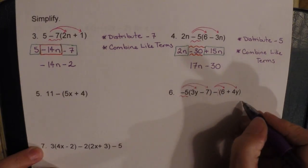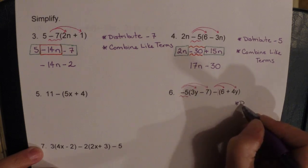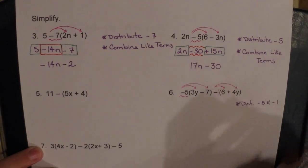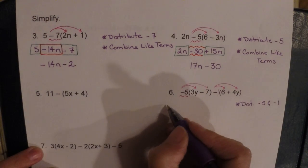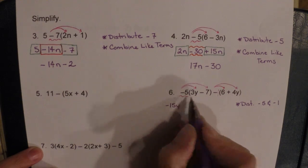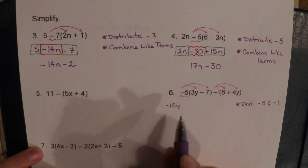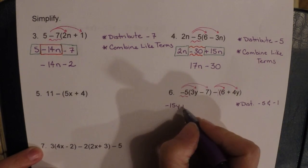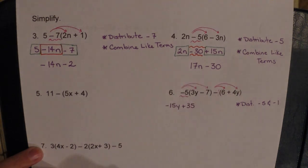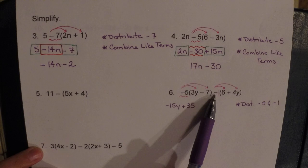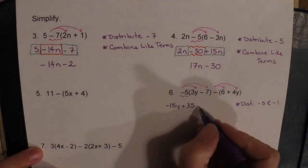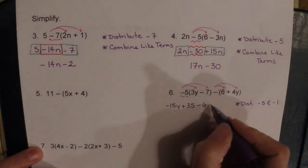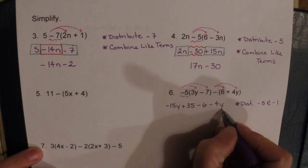Our first step is to distribute negative five and negative one. Negative five times 3y gives negative 15y, and negative five times negative seven gives positive 35. On the second set, negative one times six is negative six, and negative one times positive 4y is negative 4y.